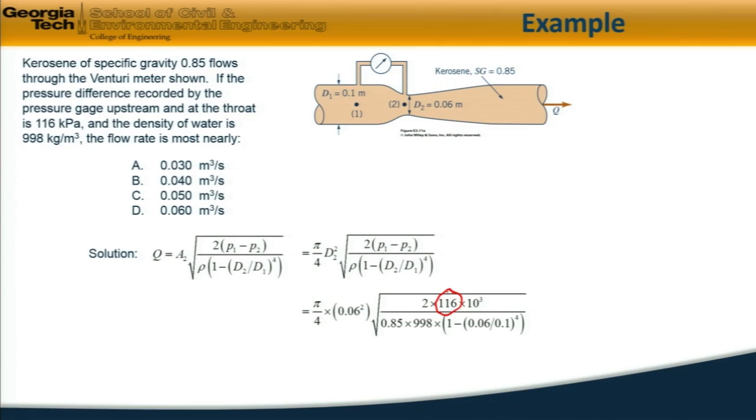The pressure difference is 116 kilopascals, or 116 times 10 cubed pascals. The density of kerosene is the specific gravity, 0.85 times the density of water. So substituting in, the answer is 0.05 cubic meters per second. And the closest answer is C.